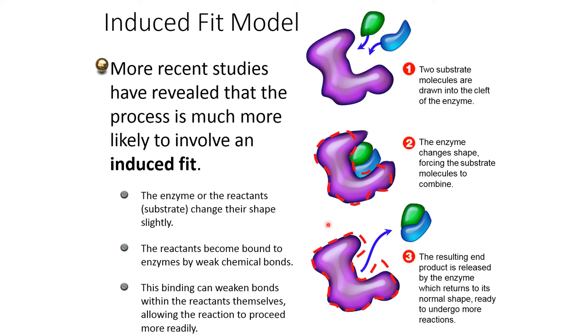Now in this picture you can see that two substrate molecules are drawn into the cleft of the enzyme. The enzyme changes its shape, forcing the substrate molecules to combine.